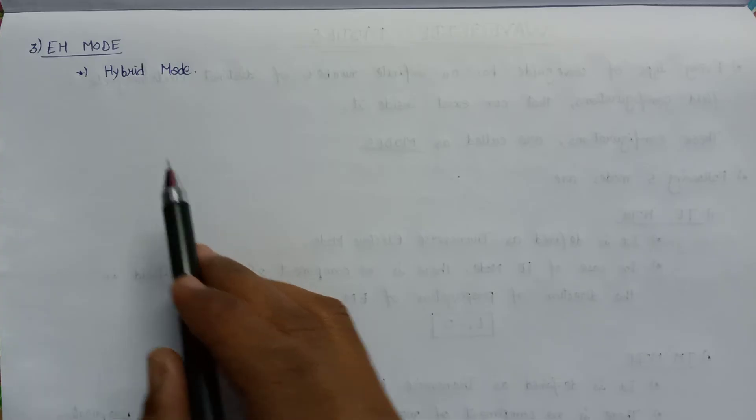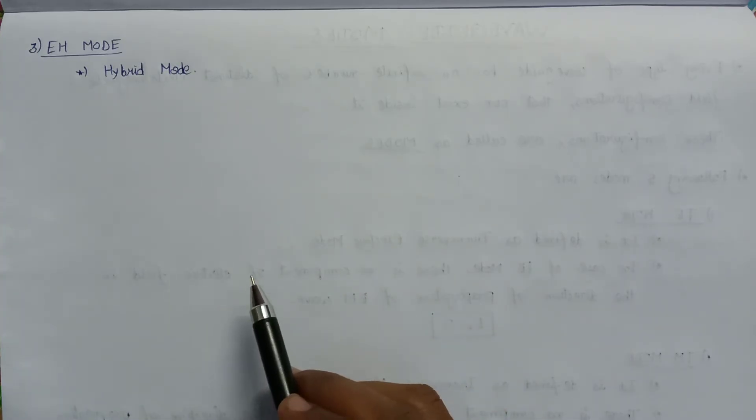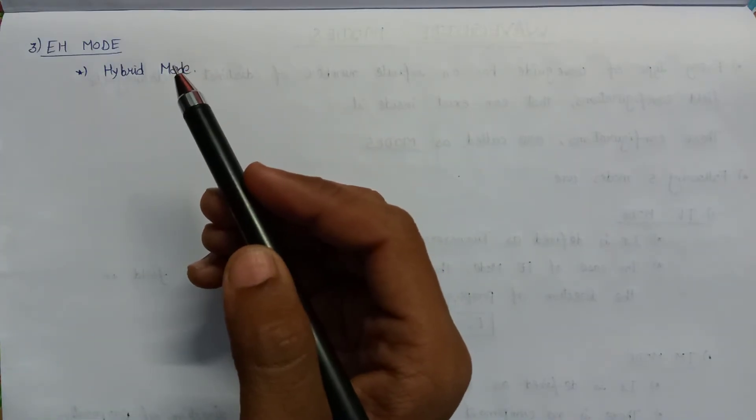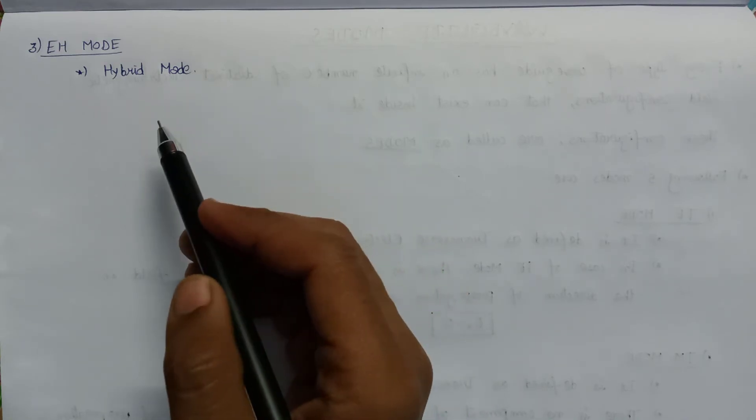Let us discuss about the third type of mode, that is EH mode. EH mode is represented as a hybrid mode. It is considered hybrid because in TE mode the electric field component is zero in the z direction, and in TM mode the magnetic field component in the z direction is zero. But in case of EH mode, neither the component of electric field nor the component of magnetic field is zero in the direction of propagation. That is why it is called a hybrid mode, and we can write that neither Ez nor Hz is equal to zero.